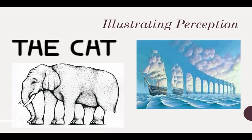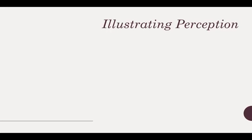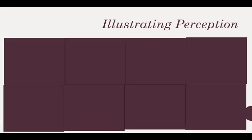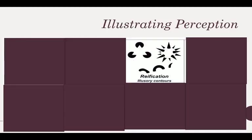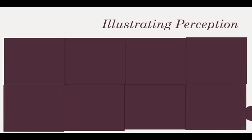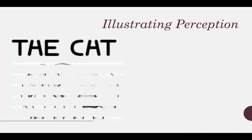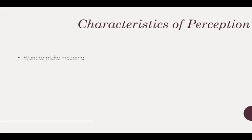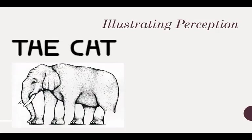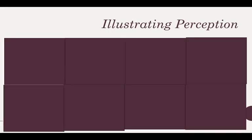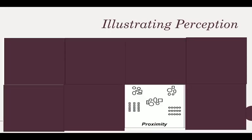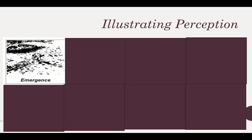Now I want to talk about perception more generally. Think about these stimuli as well as the previous ones on all of these cards. We can say a couple of things about how we detect and identify stimuli. The first is that we want to make meaning out of what we see. We don't tend to say this is a random collection of dots — we want to make a story out of it, make meaning out of it.